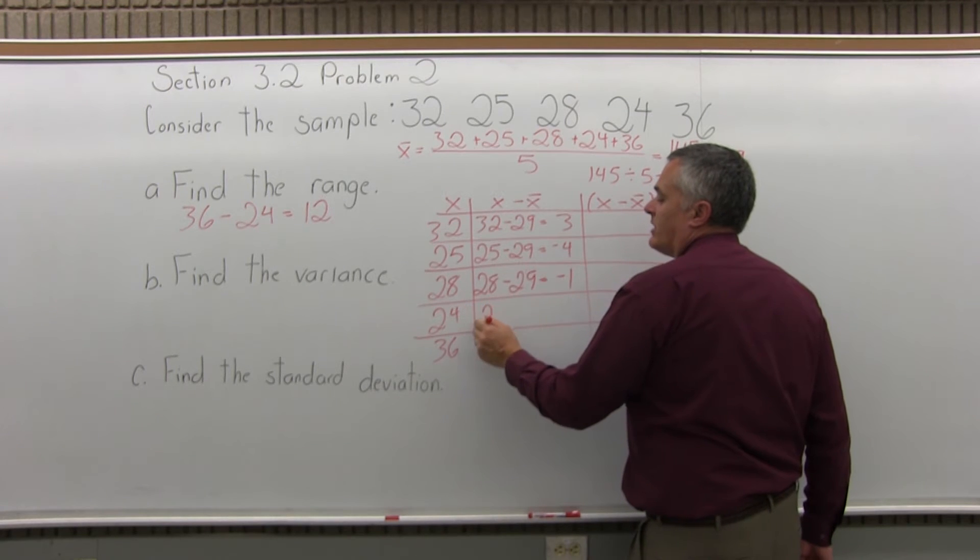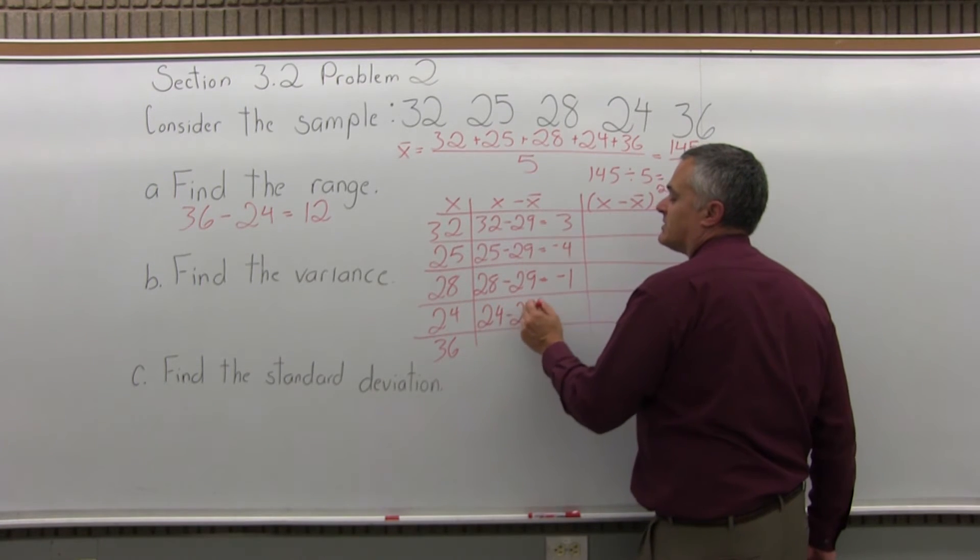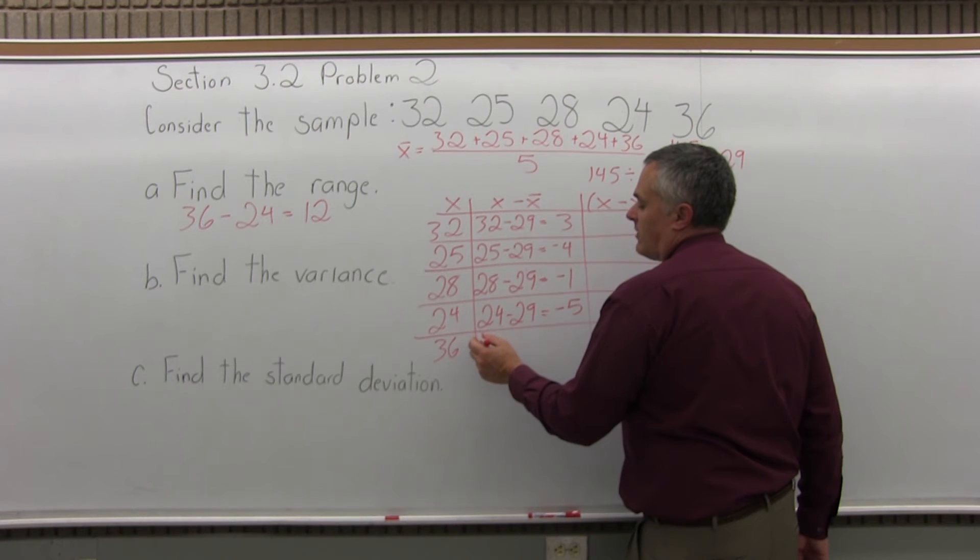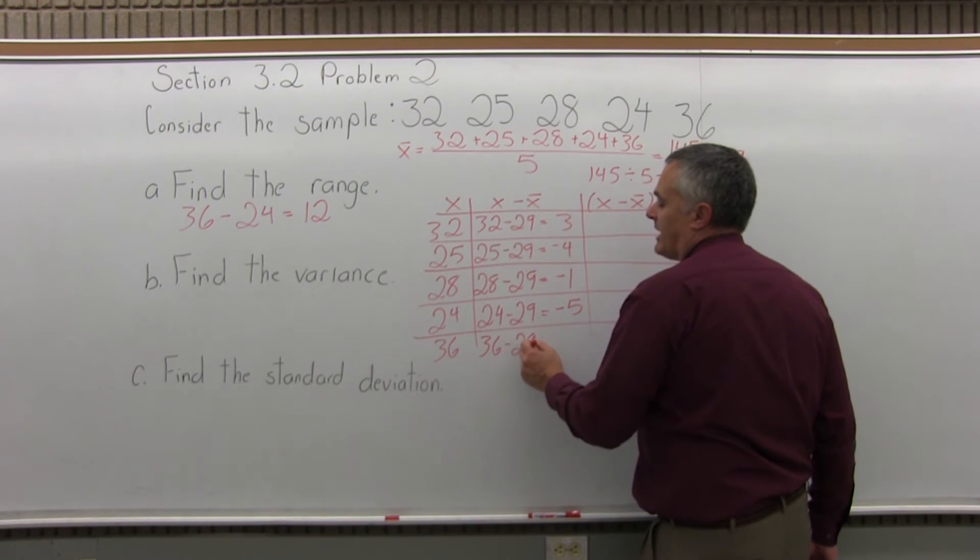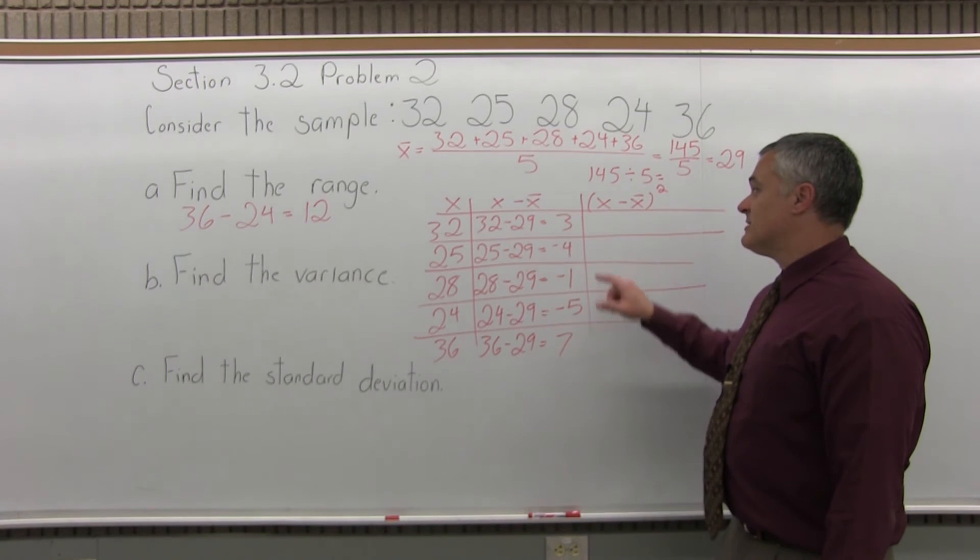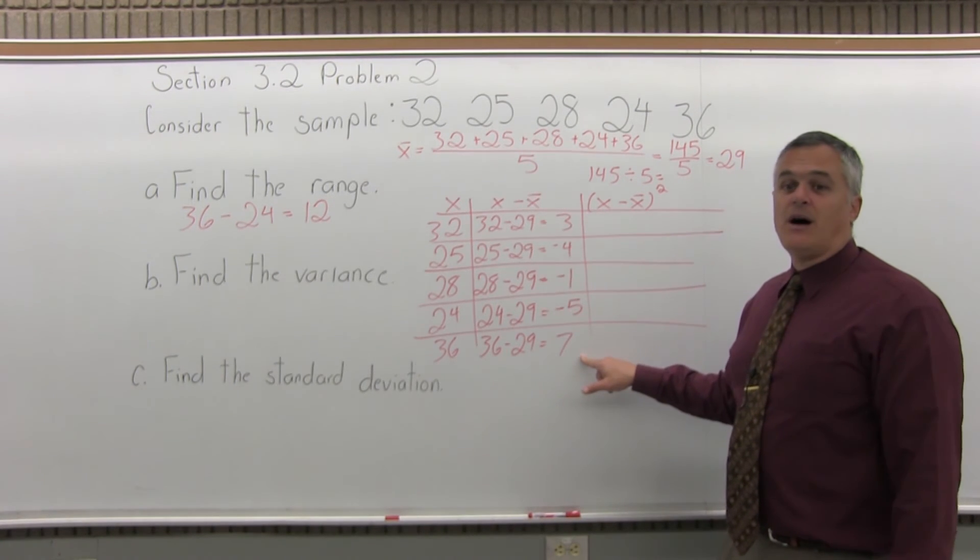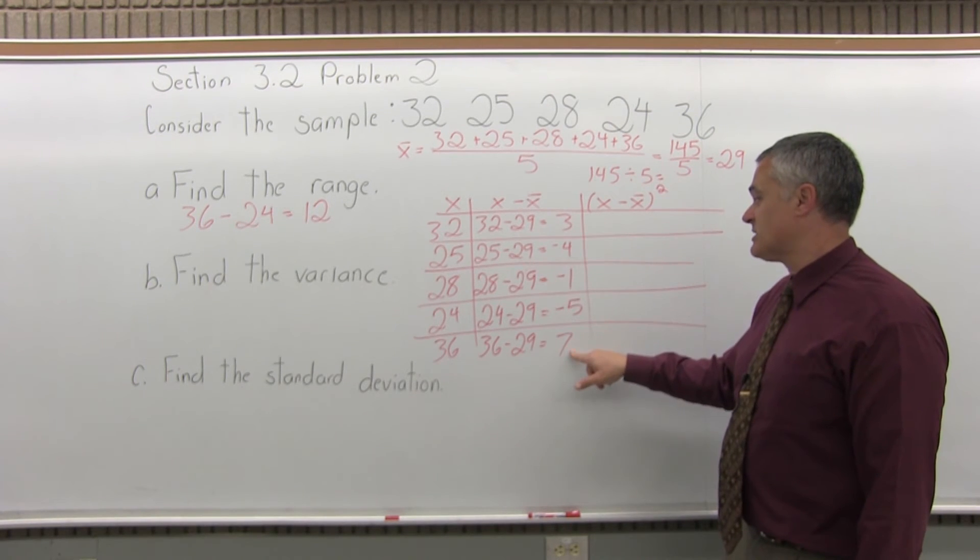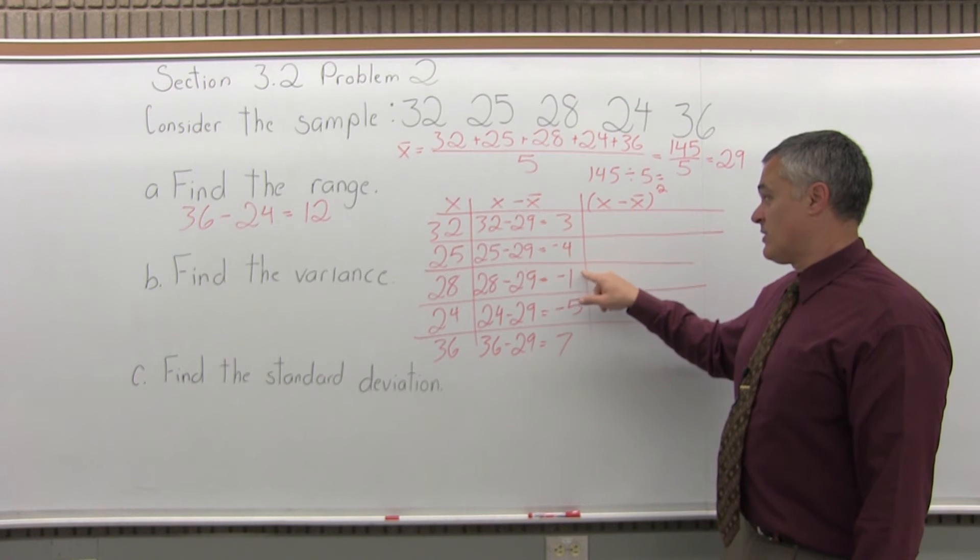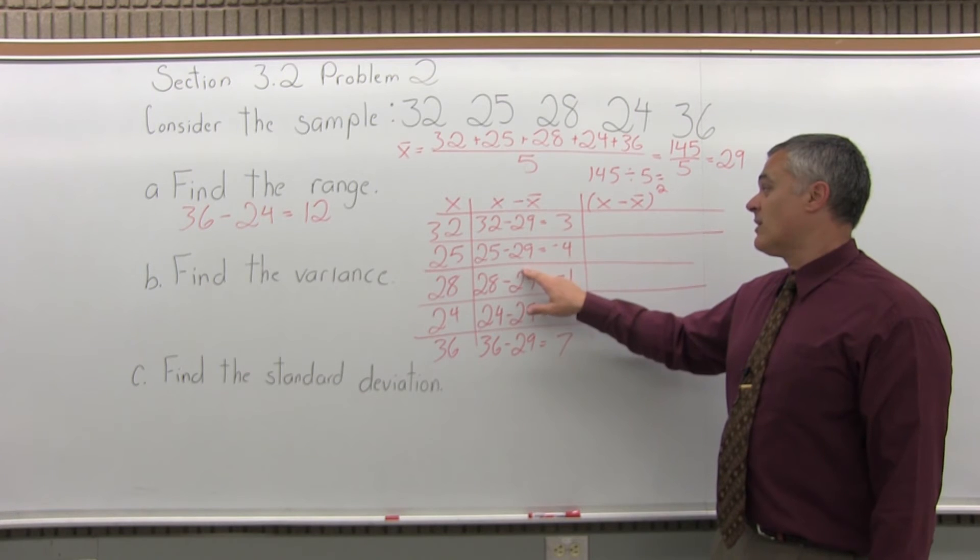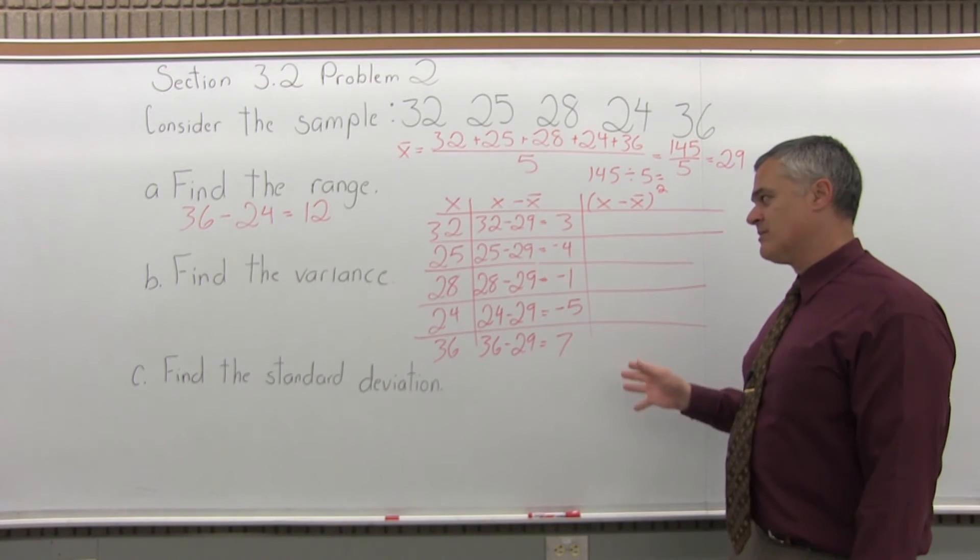The next row, X is 24. So, X minus X bar is 24 minus 29. That's negative 5. And finally, in the bottom row, X minus X bar will be 36 minus 29 is positive 7. Now, at this point, it's not a bad check to see if your total of your middle column has a total of 0. So, if I find my positives, positive 3, positive 7 is positive 10. The negatives, negative 4, negative 1, negative 5 is negative 10. Again, I do get a total of 0. So, that's a good sign. If you don't have 0, you must have made a mistake somewhere.